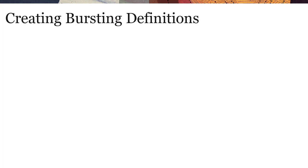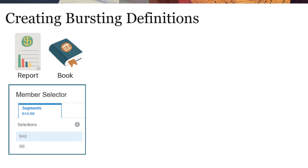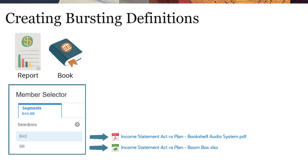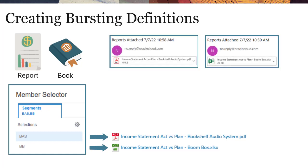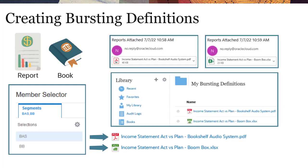Bursting provides the ability to run a report or book for more than one member of a single dimension for one data source, generating a PDF or Excel output file for each member. You can email the generated output files to a recipient list, or publish the output files to the Narrative Reporting Library. You have the option to just email, just publish, or do both.